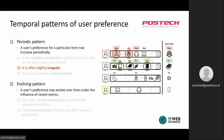Second, the periodic pattern can be slightly irregular. User A sometimes buys a winter coat in October, and user B may buy a book on Thursday. These behaviors are slightly different from the periodic cycle, but not significantly deviated.